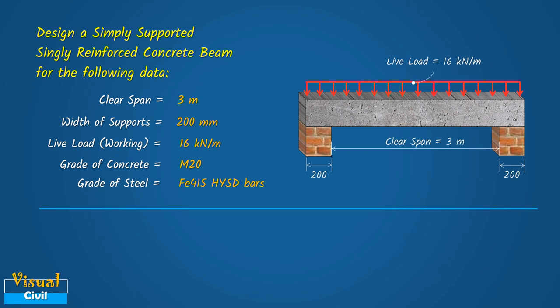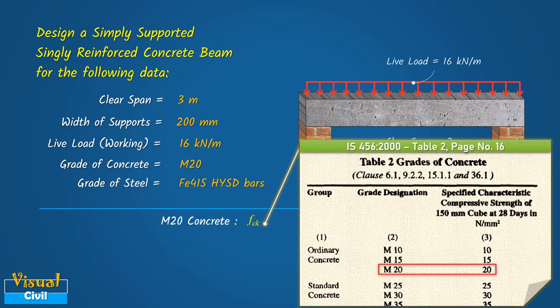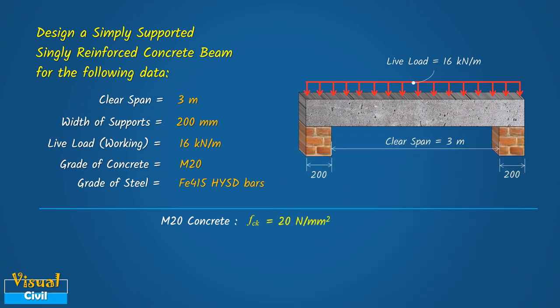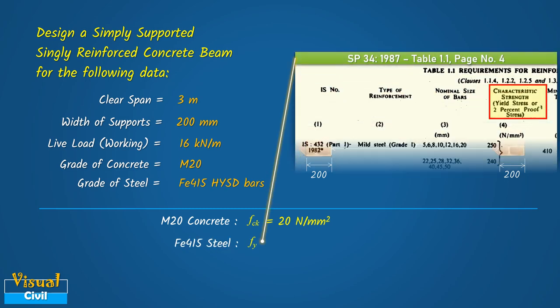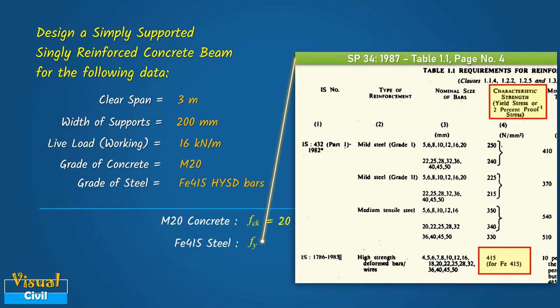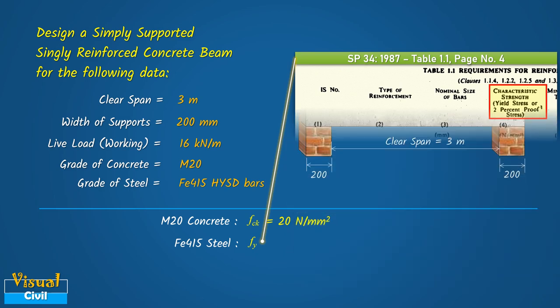Let us start by getting the values of FCK and FY. As per table 2 of IS456-2000, the value of FCK for M20 grade concrete is 20 N per mm square. The value of FY for Fe415 steel is 415 N per mm square.